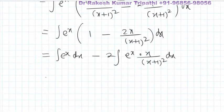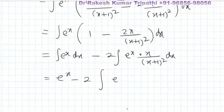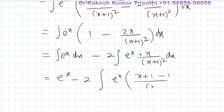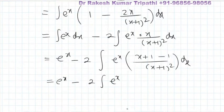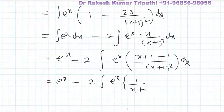The integral of e to the power x is e to the power x, minus 2 times the integration of e to the power x into x upon — here we add 1 and subtract 1 — (x plus 1) whole square dx. On separating this, we find 1 upon (x plus 1) minus 1 upon (x plus 1) whole square.